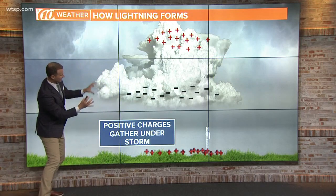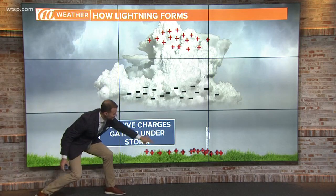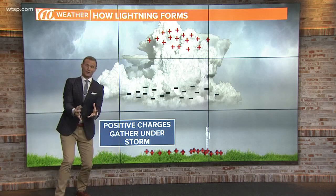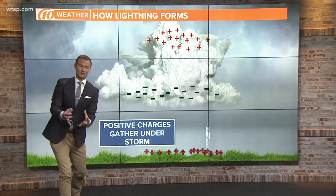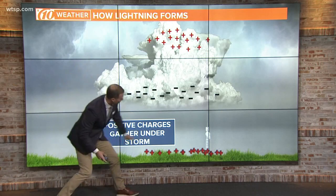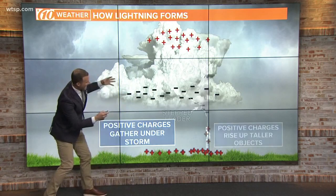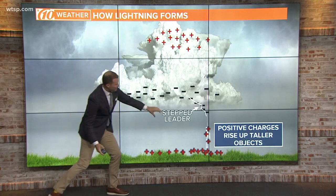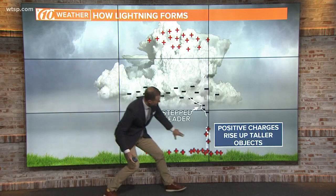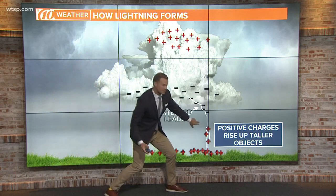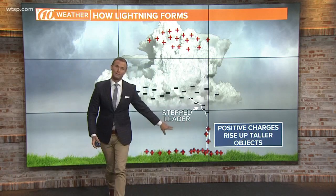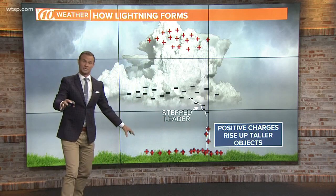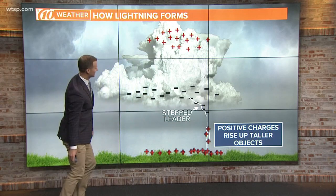Now, as that's occurring, positive charges also begin to gather underneath the thunderstorm in the ground. As all of that's happening, those positive charges begin to rise up some of the taller objects. That's why you want to stay away from tall objects when there's a thunderstorm in the area.